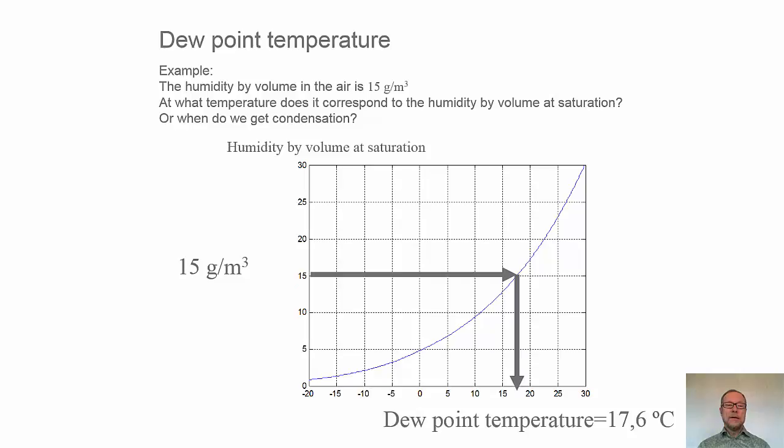In this case, when we have a humidity by volume in the air of 15 grams per cubic meter, then we see what temperature does that correspond to, and then we find out it corresponds to 17.6 degrees C. So the dew point for this air volume is 17.6 degrees.